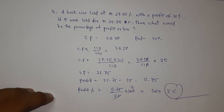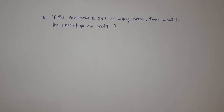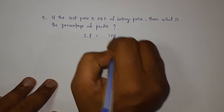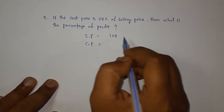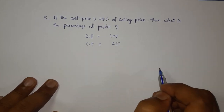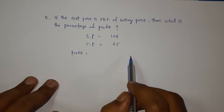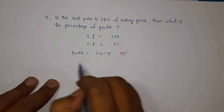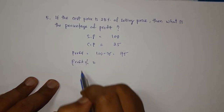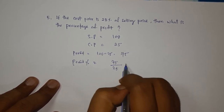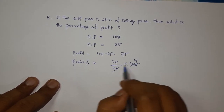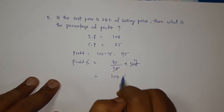Next question: if the cost price is 25 percent of the selling price, what is the percentage of profit? Let the selling price be 100. Then cost price is 25% of 100, which is 25. Profit equals SP minus CP: 100 minus 25 equals 75. Profit percent equals 75 divided by 25 into 100, which equals 300 percent profit.